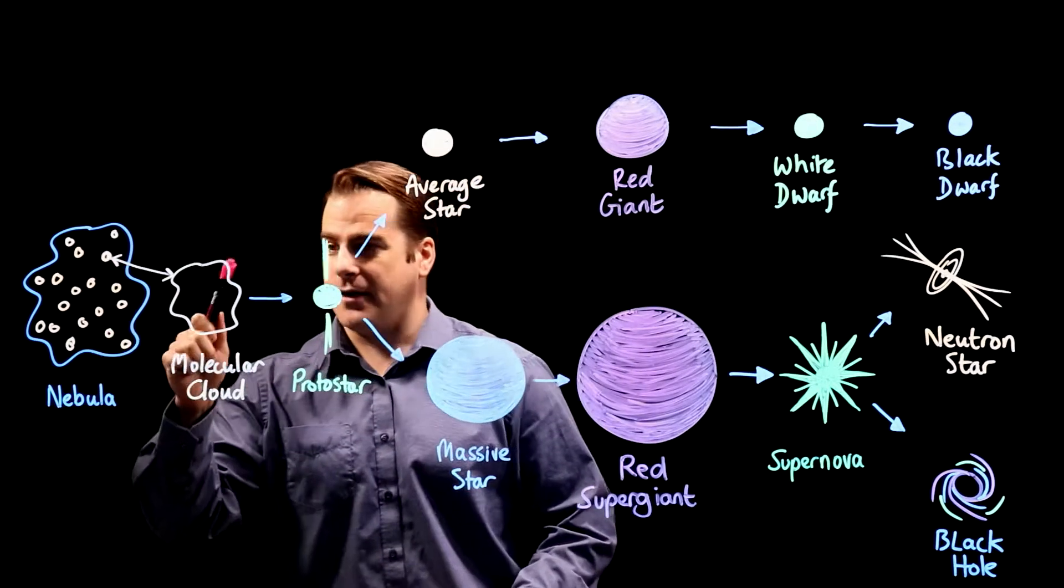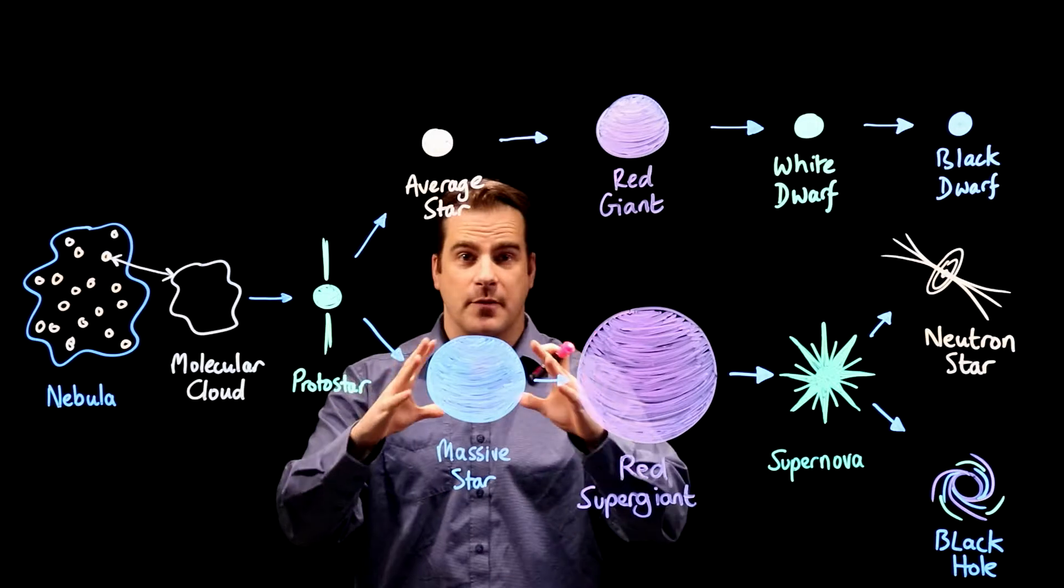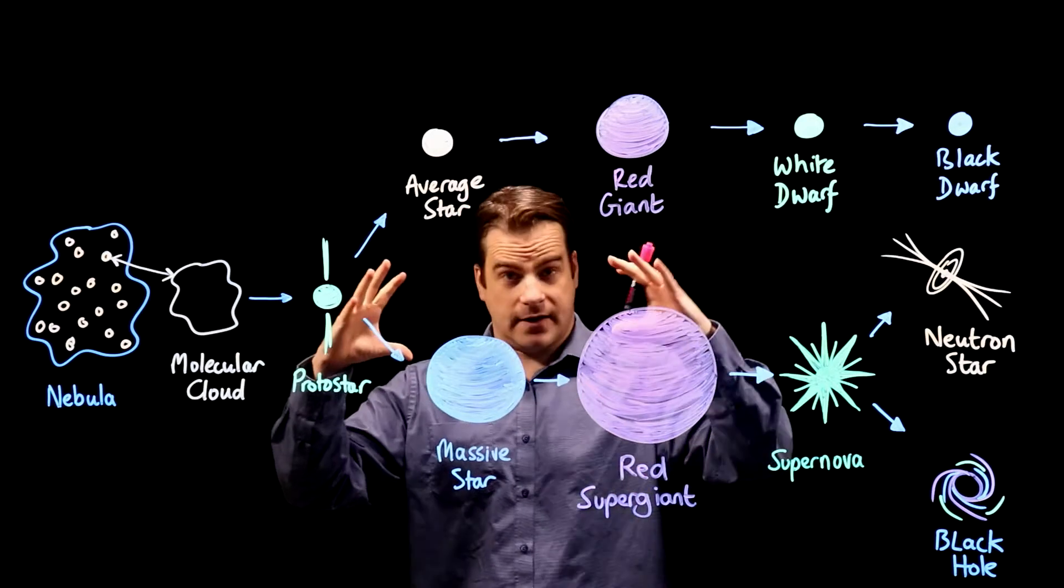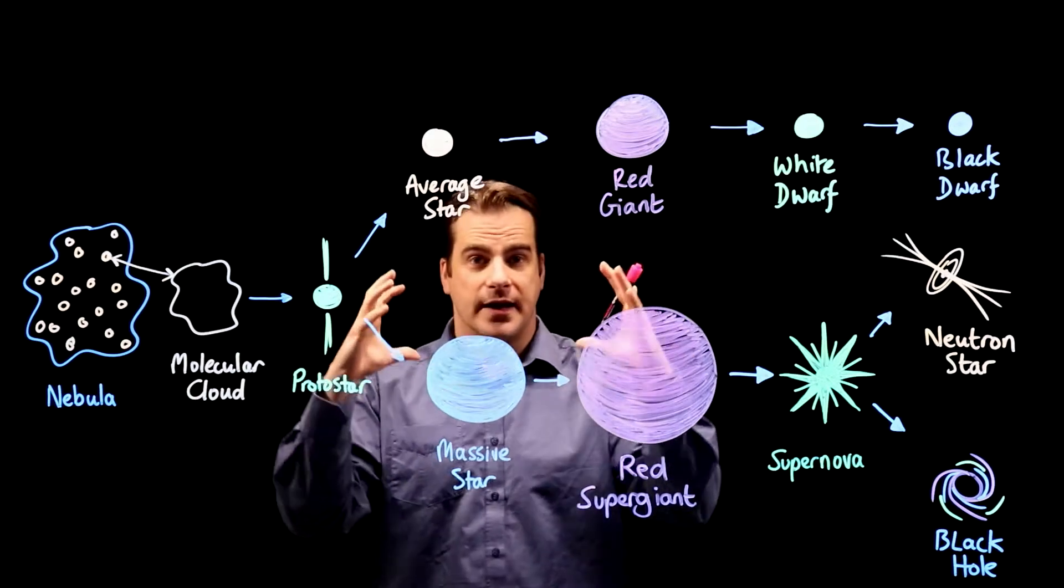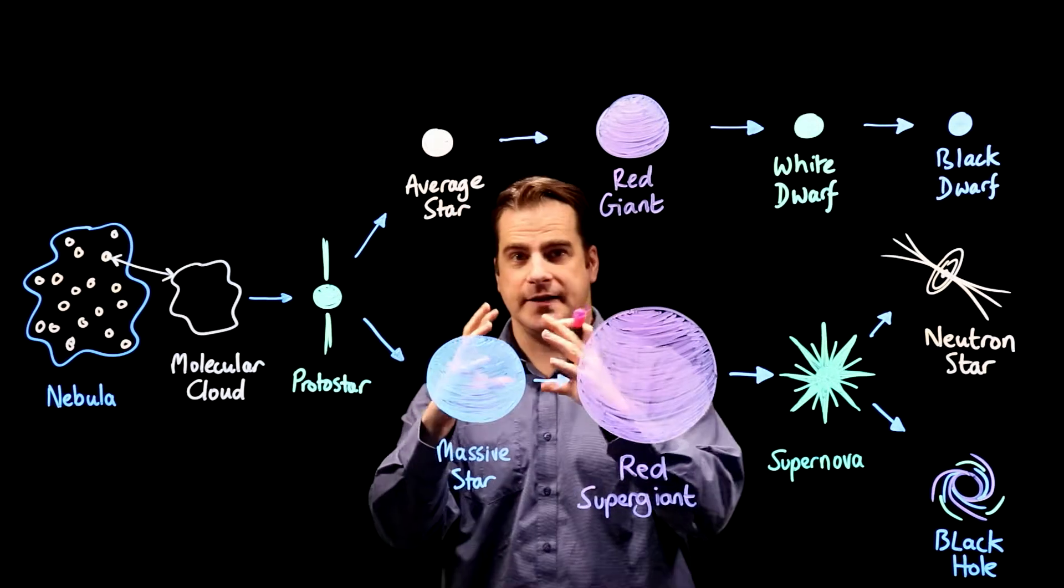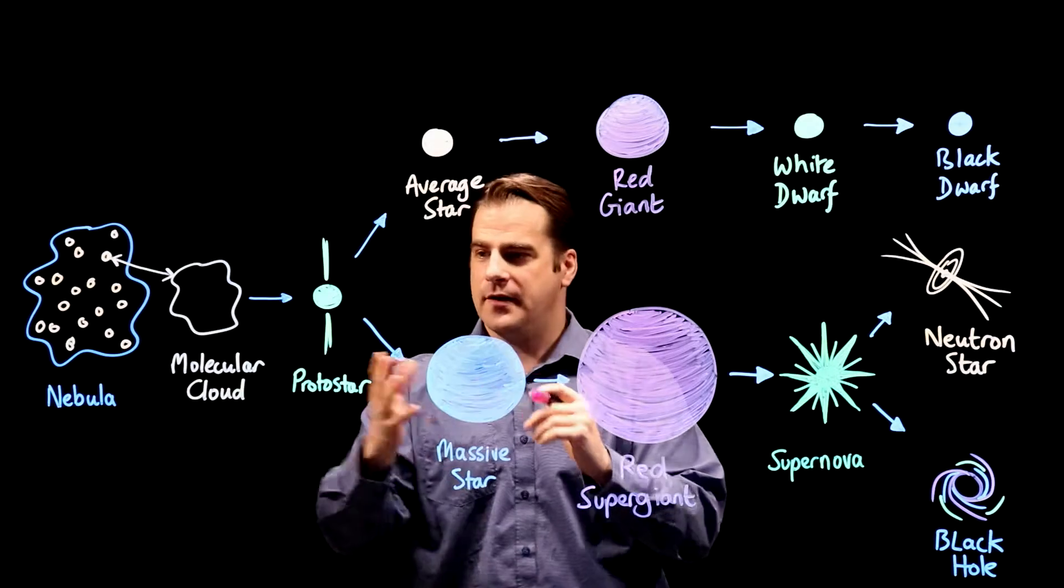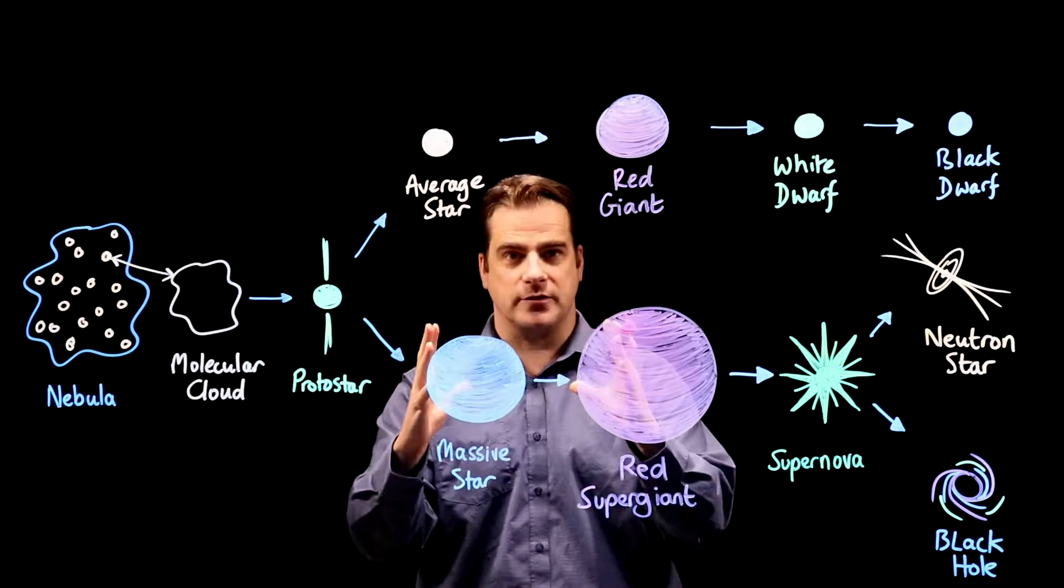Now a molecular cloud is mostly hydrogen, a bit of dust, and it starts to collapse under its own gravity. As it does so it heats up and as it heats up and gets denser it forms a protostar.